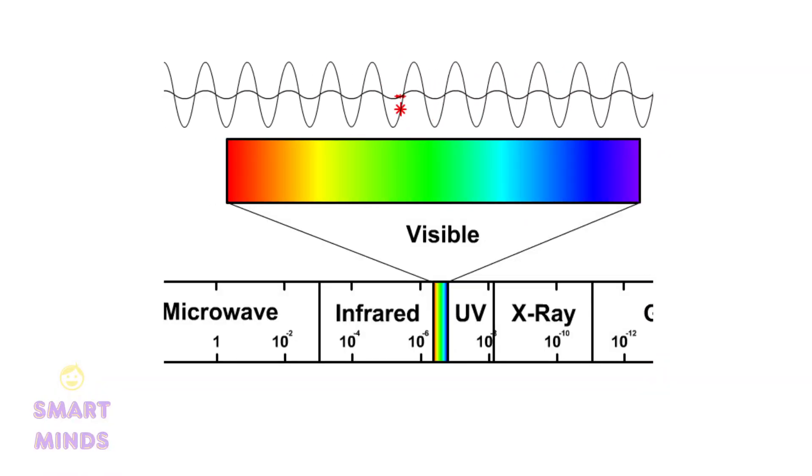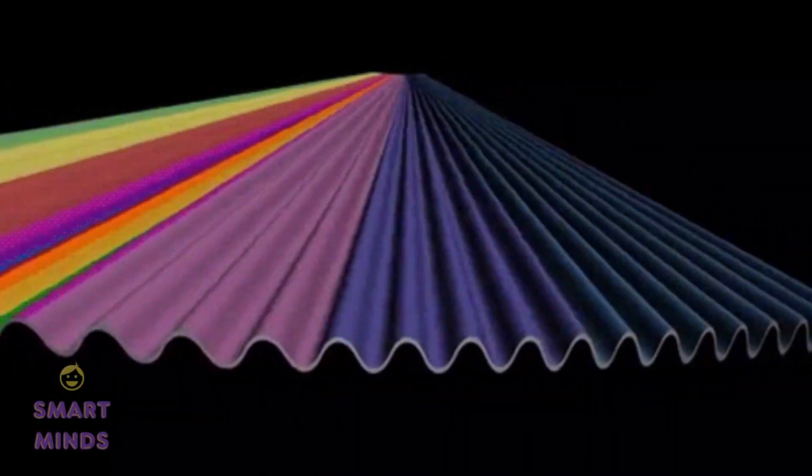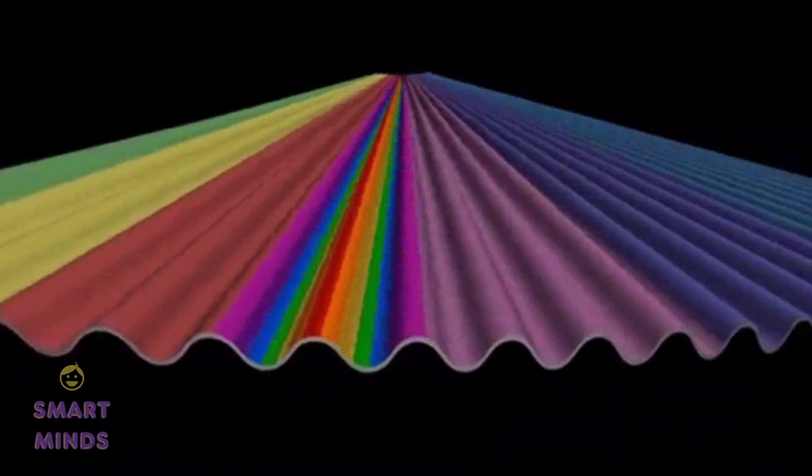Visible light is the part of the electromagnetic spectrum that we can see with our eyes, but it has a range of wavelengths and frequencies that correspond to different colors from red to violet.